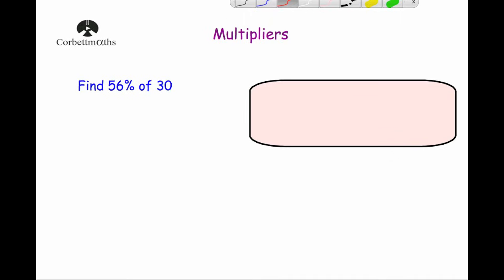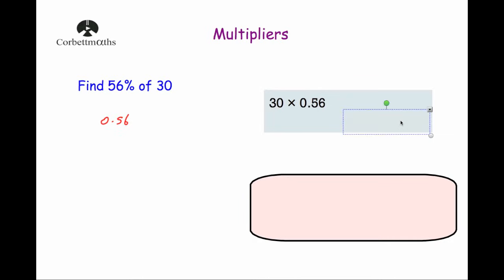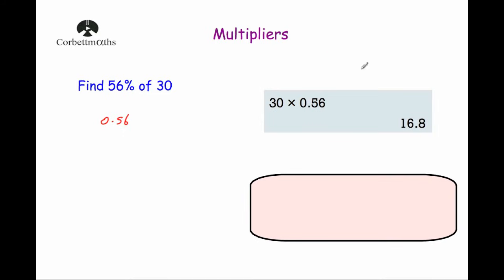Our next question is to find 56% of 30. We're going to change our 56% to a decimal number. So 56 divided by 100 would be 0.56. Then times by 30 — so 30 times by 0.56 gives us 16.8. This shows that on a calculator, using a multiplier is just really quick and simple, whereas finding 50%, 5%, 1%, 1%, 1% and adding them all up would take much longer.